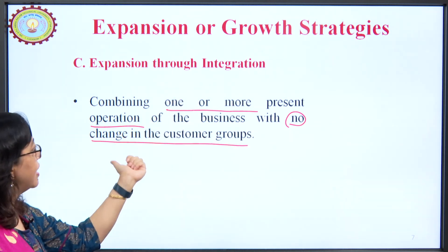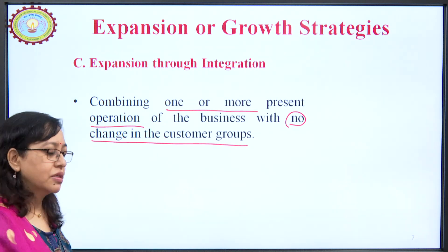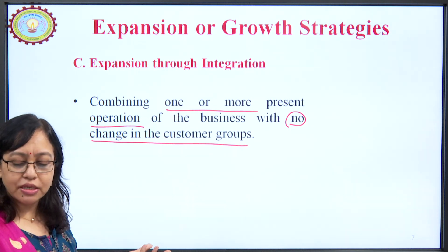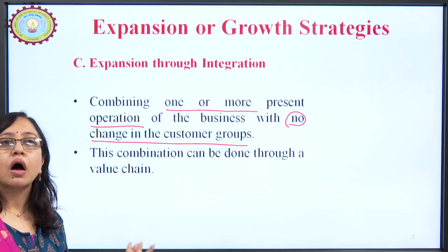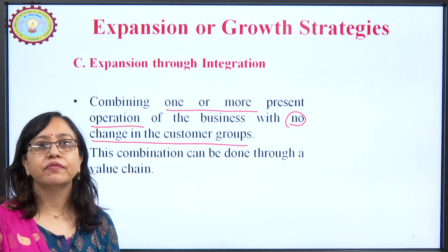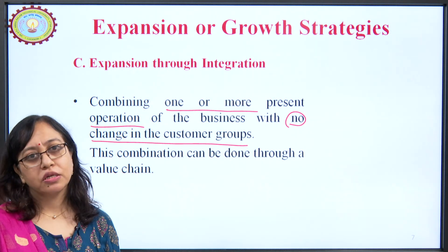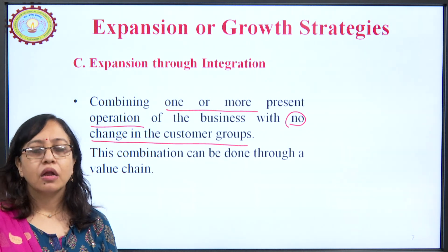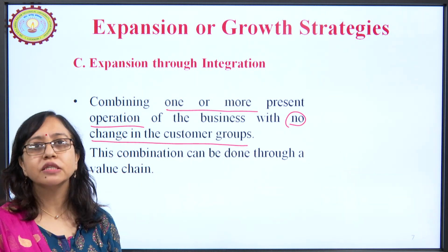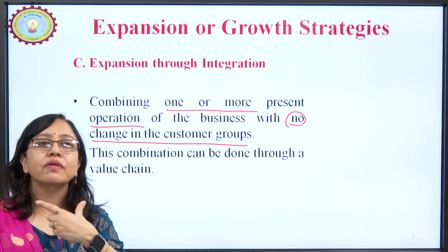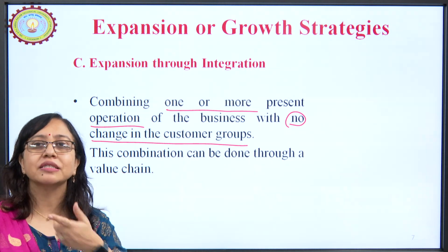The key point is there is no change in customer groups — the company is trying to combine one or more operations of the business. A business consists of several operations; you undertake several processes in making a product or service available to the customer. When you combine some of these processes together, that is known as integration. This combination can be done through a value chain. If you have read Porter's value chain — a concept given by Michael Porter — in an organization the various activities that take place to deliver a final product or service to the customer make a chain.